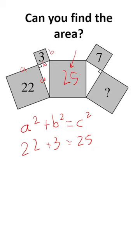Similarly, to find the question mark, we just need to do c squared minus b squared to find a squared. So we just do 25 subtract 7, which gives me the missing area, 18.